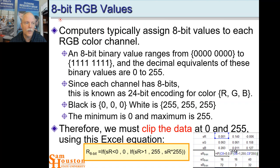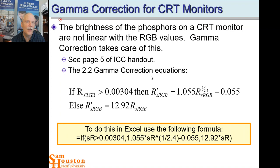In the old days, cathode ray monitors had a non-linear response to illumination — the electron current hitting the phosphor was governed non-linearly by the color value strength. This was corrected with what they called gamma. You may need to check whether your monitor, printer, or projector needs gamma correction. If so, there's a specific gamma correction formula to apply.